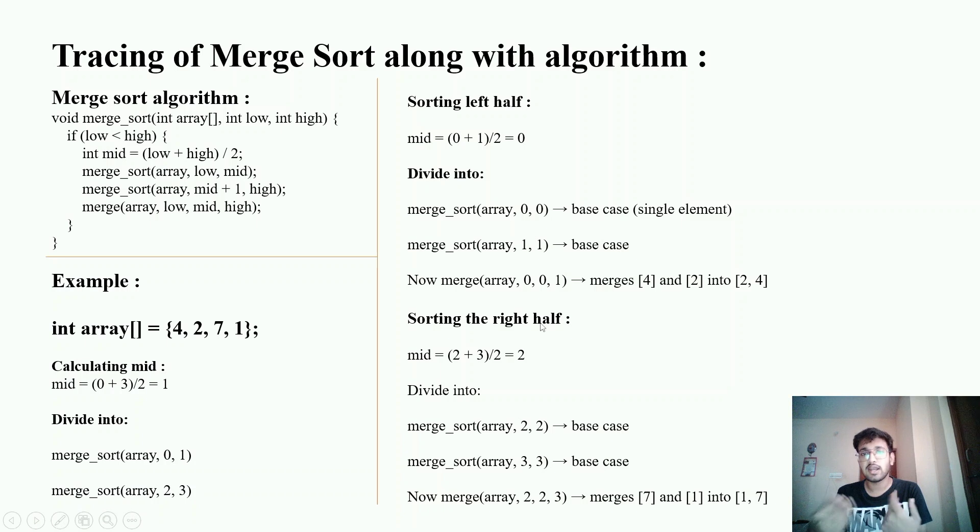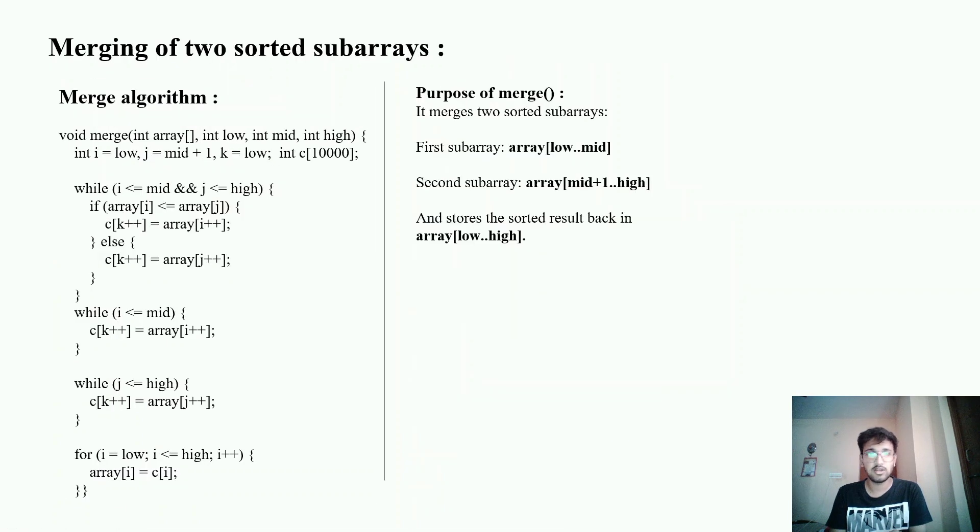The right half again we will be having the value of 7 and 1 and the index will be 2 and 3. We will be getting a mid value of 2 which will be again doing the merge sort recursively and we will be having the base case of 2,2 and 3,3 and in the final step we will be merging. Now we will be wondering what merging is so let's get into it.